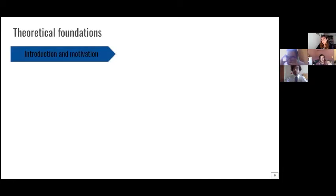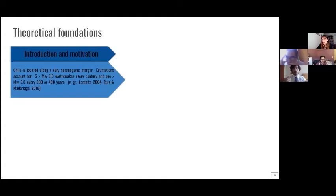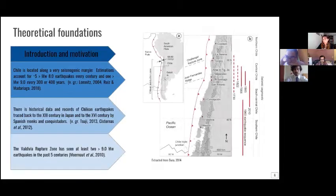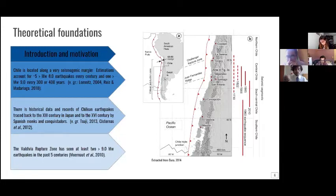So now I'm going to delve a little bit into the seismological context of Chile. Chile is located along a very seismogenic margin in the north up until Taitao Peninsula. We have the Nazca Plate subducting under the South American Plate, and from the Chile triple junction point in the Taitao Peninsula to the south, we have the Antarctic Plate subducting under the South American Plate. This accounts for at least five or so earthquakes with a magnitude of eight or more every century and one gigantic earthquake with a magnitude of nine or more every 300 or 400 years. There is also historical data and records of Chilean earthquakes that can be traced back up until the 13th century from accounts from Japan and up until the 16th century by Hispanic chronicles and conquistadors.